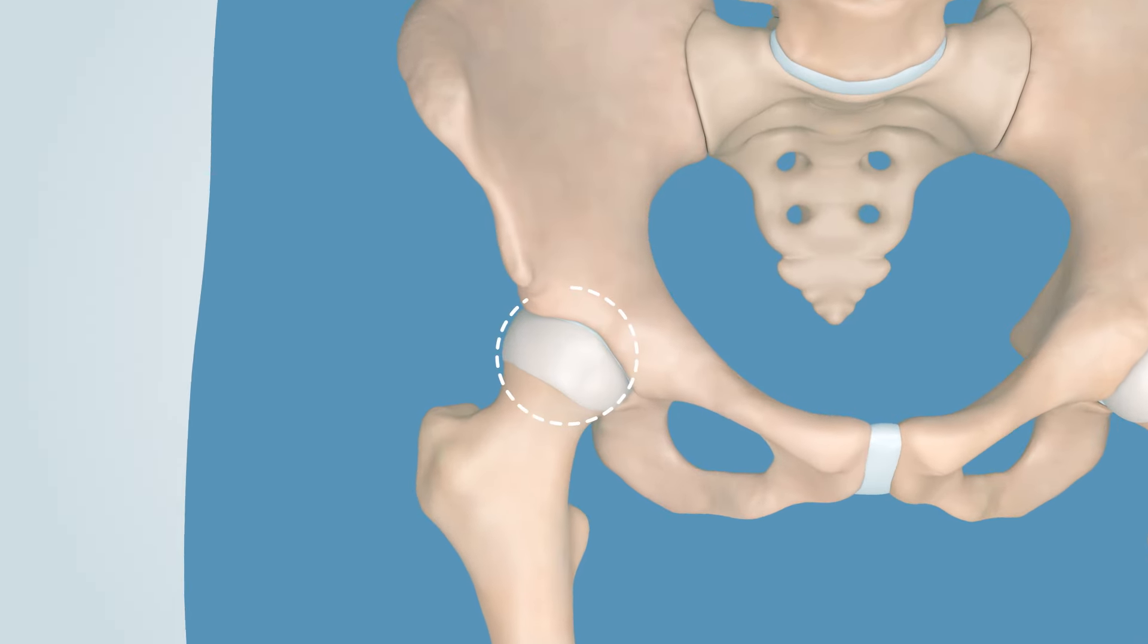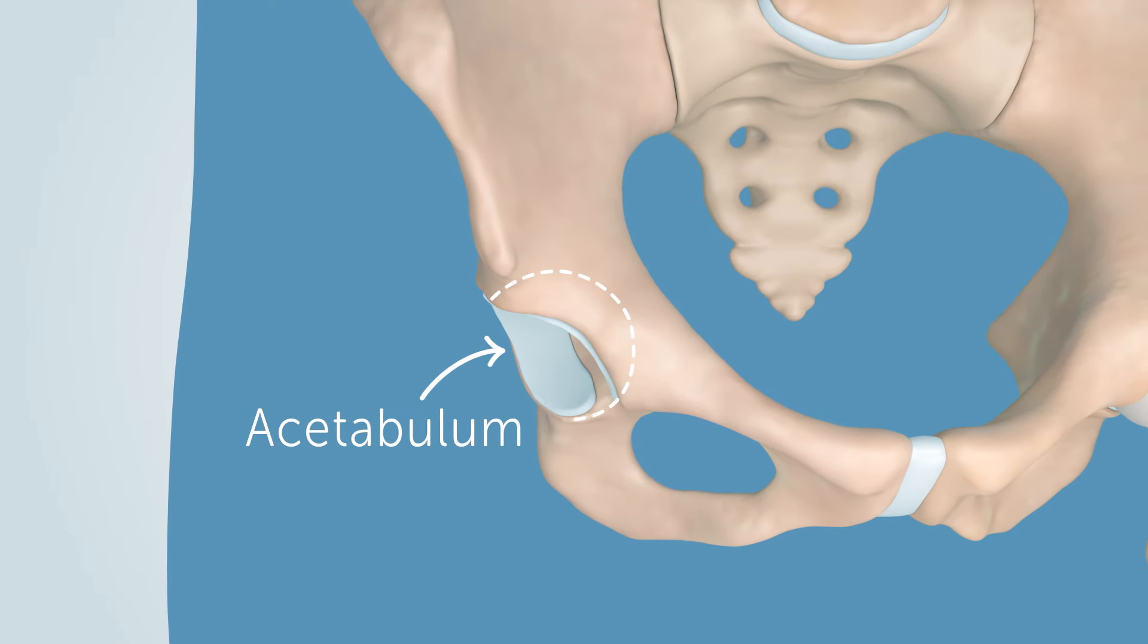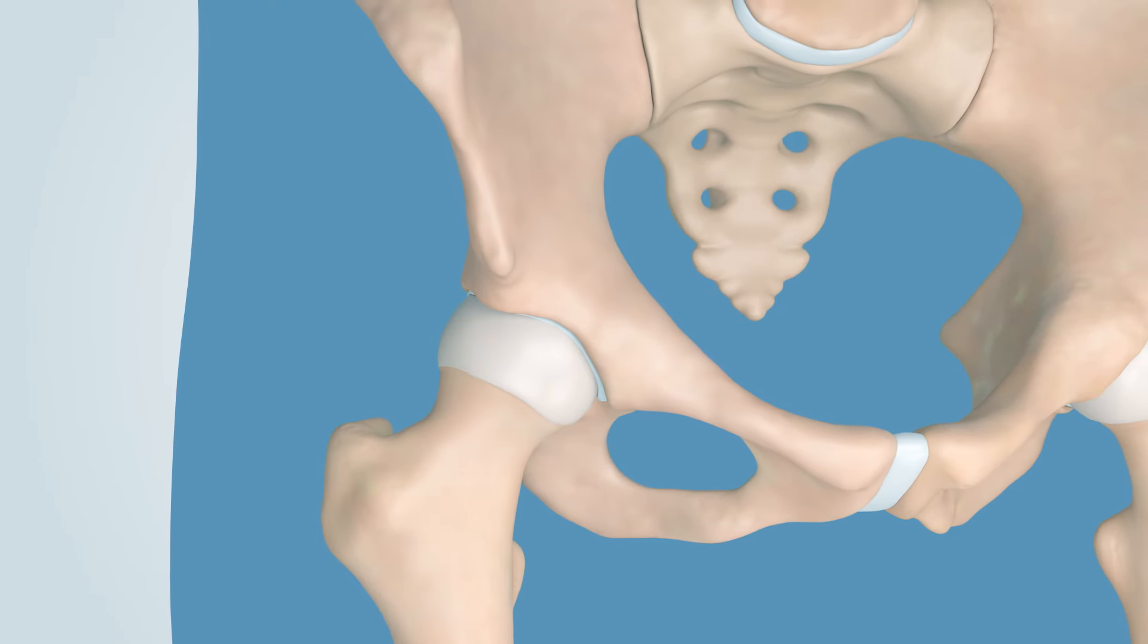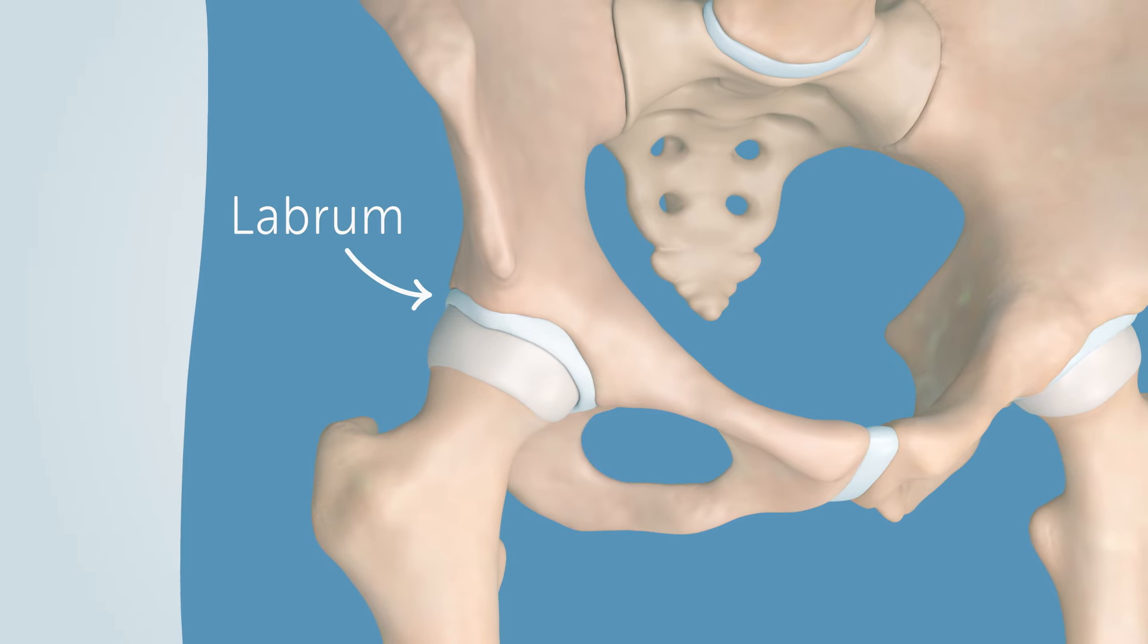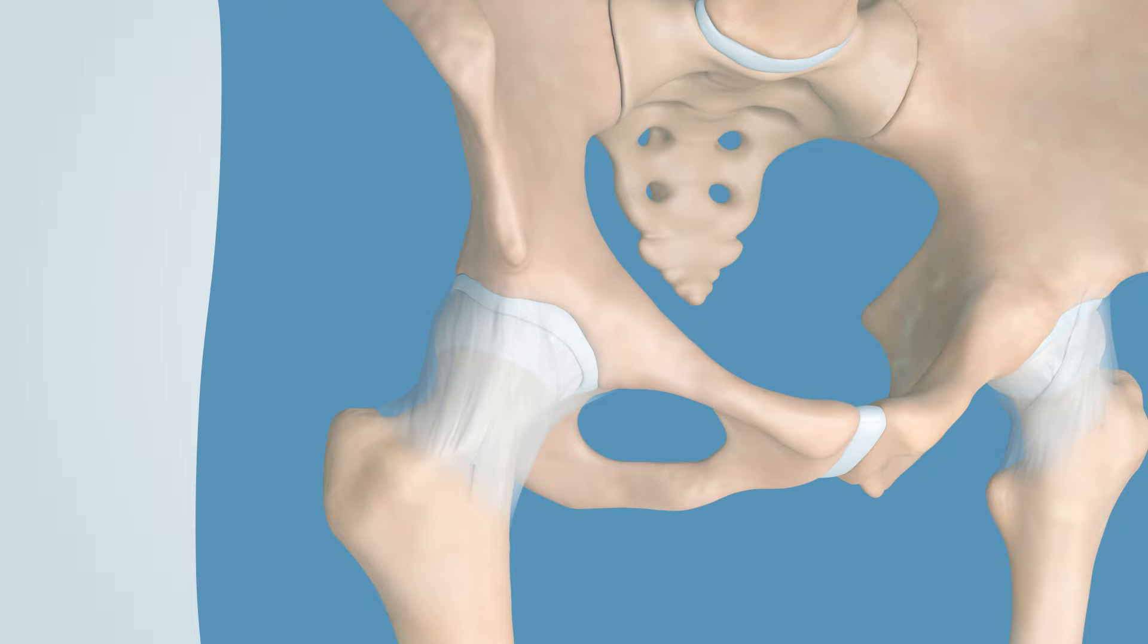The hip joint is made up of a ball, the head of the femur, and a socket, the acetabulum. Around the joint is a rim of cartilage called the labrum and a surrounding joint capsule keeping the femur in place.